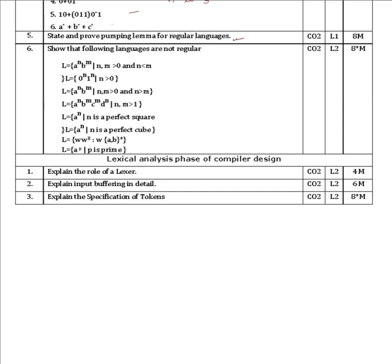State and prove the pumping lemma for regular languages — a very important question worth 8 to 10 marks, with 6 marks for the theorem and 4 marks for a problem. Standard problems include proving that a^n (n is a perfect square), a^n (n is a cube), reverse of a string, a^p (p is prime), and 0^n 1^n are not regular languages.